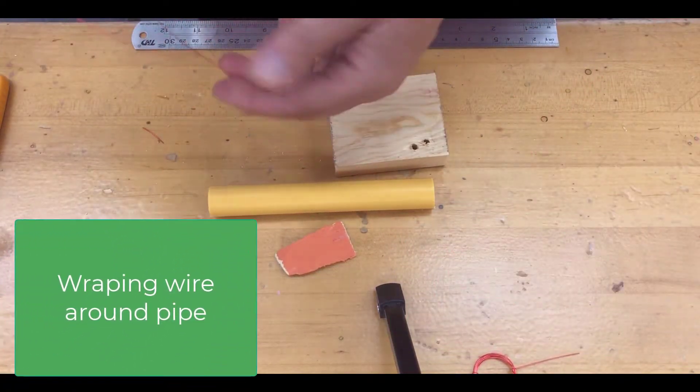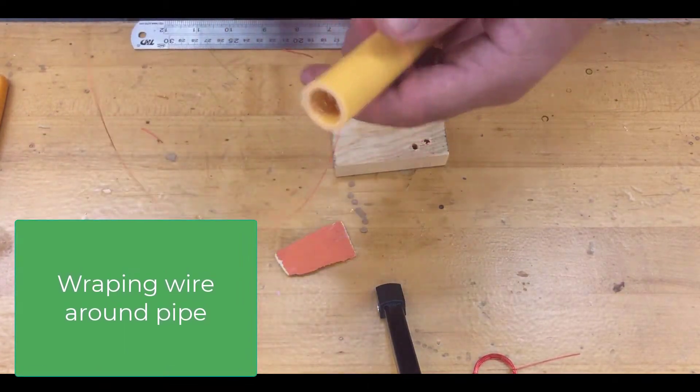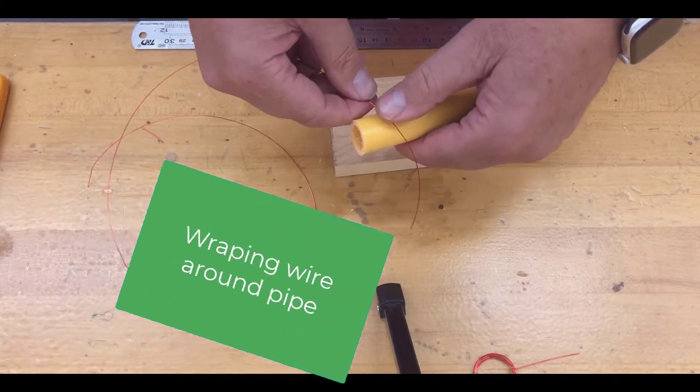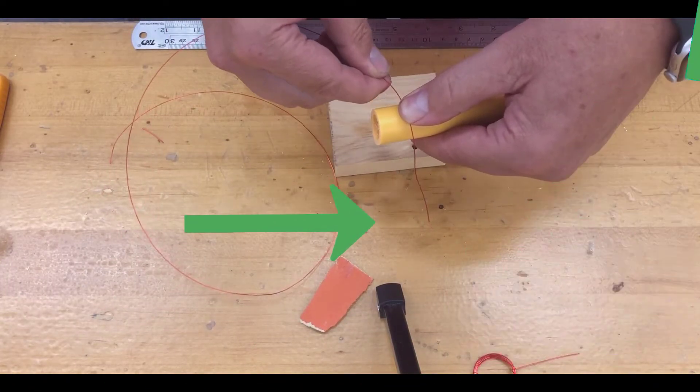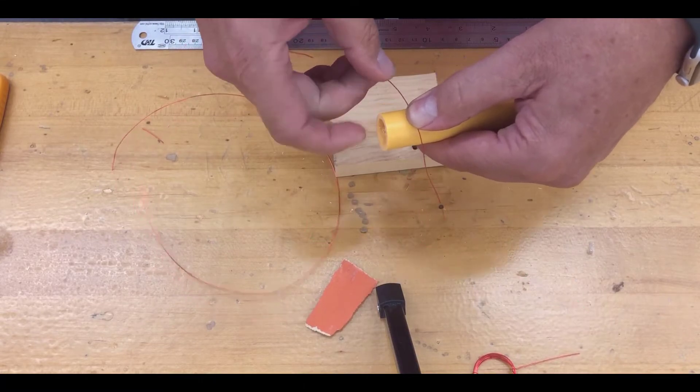Step one is to grab the block for wrapping. You want about three inches to start overhanging there. Two and a half, three inches, something like that.